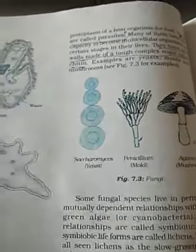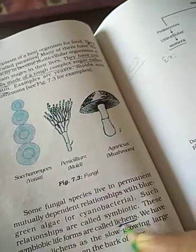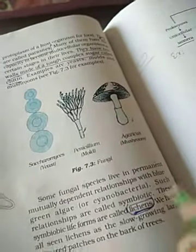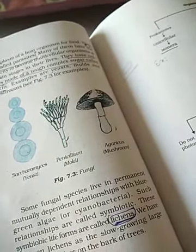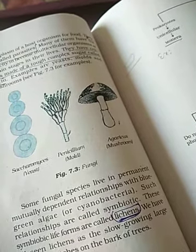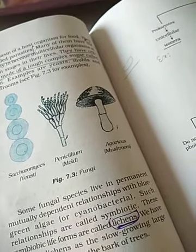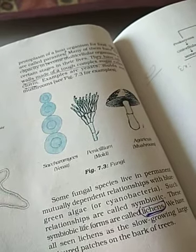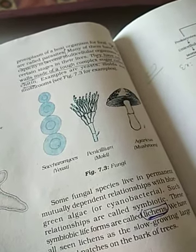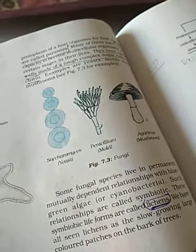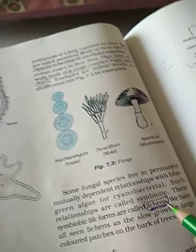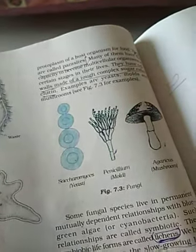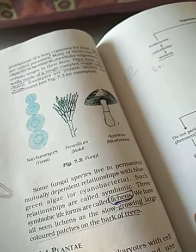This is called the lichen — a combination of fungus and algae. There is another category where lichen fungus and algae both live in the same way. The fungus provides shelter and the algae that live with it provide food through photosynthesis. Algae is in the plant category. Lichens are slow-growing and appear as large colored patches on the bark of trees, especially in areas of high moisture.